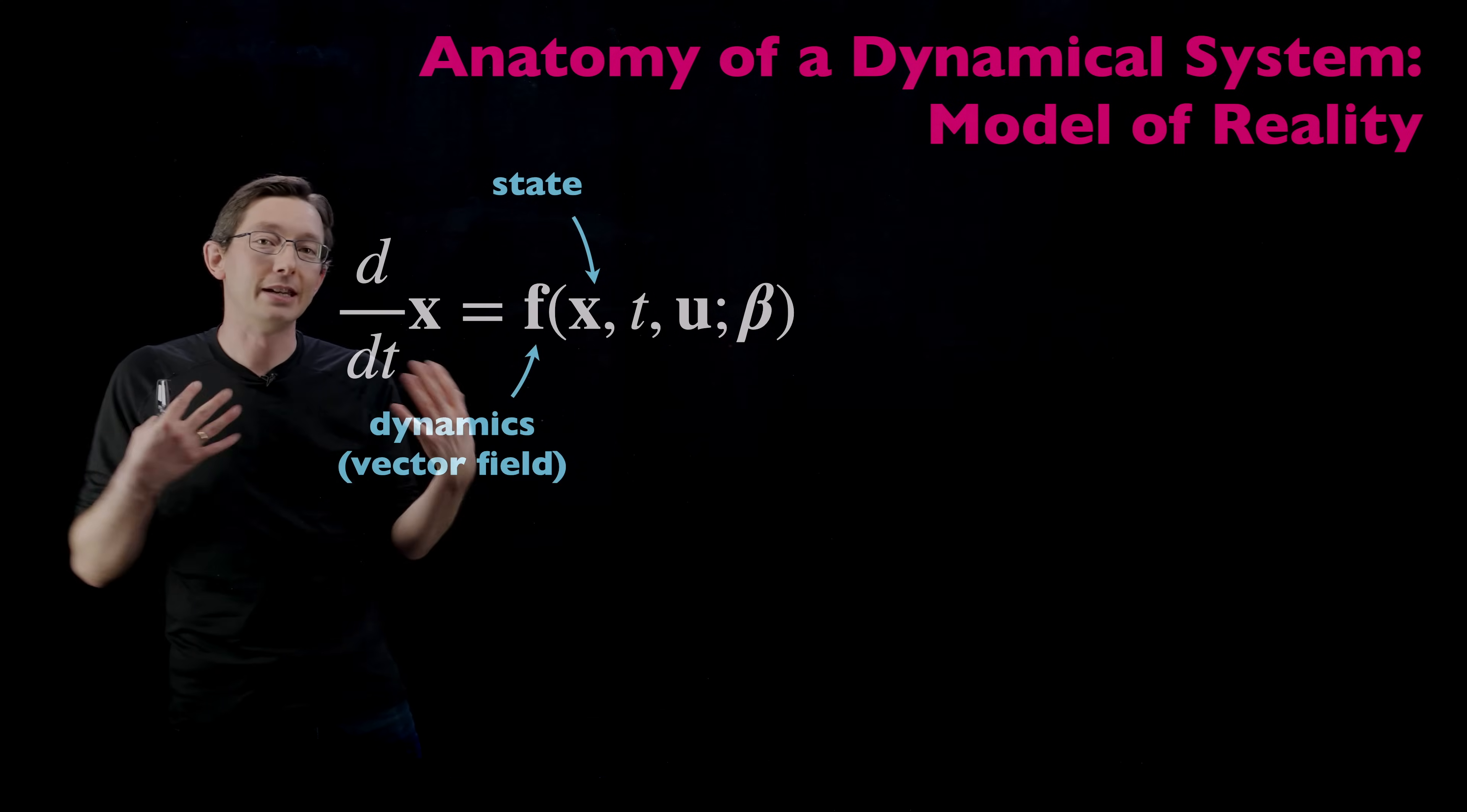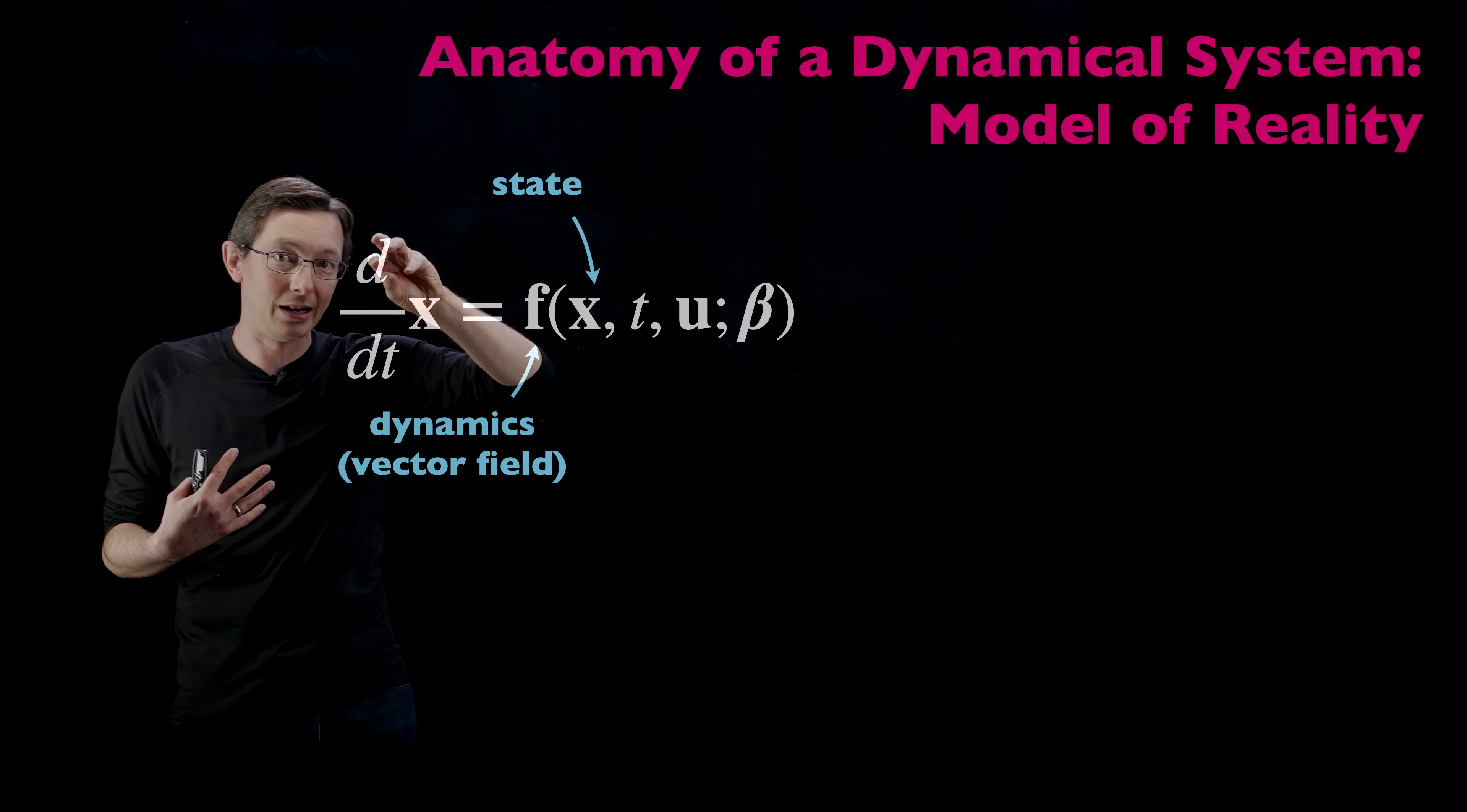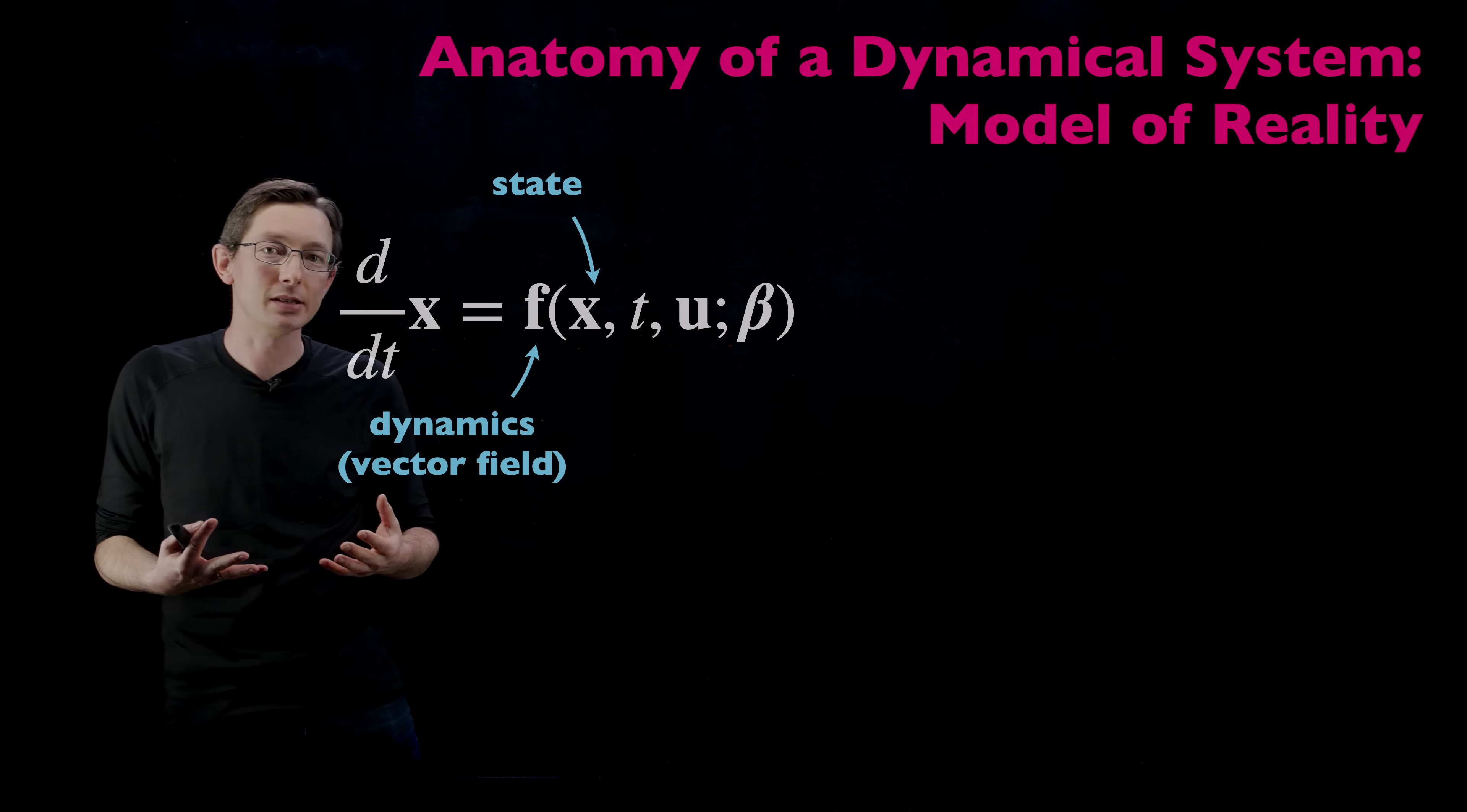F is what we call the dynamics. It's a set of functions, F1, F2, F3, that describe the dynamics of state 1, state 2, state 3. So the time derivative of X1 will be given by the first row equation, F1. And the time dynamics of X2 are given by F2 and so on. So F is a vector valued function that tells me given a current state X, how does that state change in the next time instant? That is the dynamics.